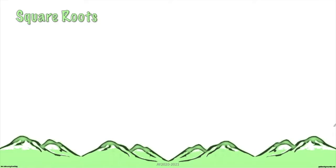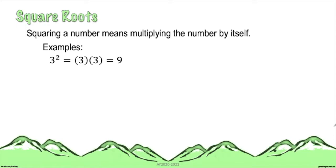Another thing you have to know about square roots is that squaring a number means multiplying the number by itself. For example, if we have 3 raised to the power of 2, it can be expressed as 3 times 3, which is equal to 9. The exponent of 2 means that the number should be multiplied by itself 2 times.